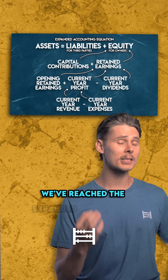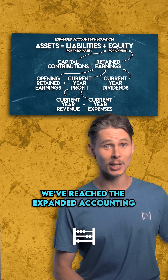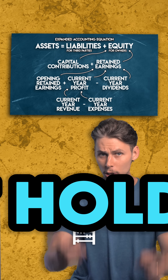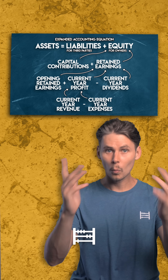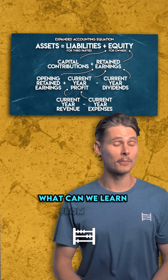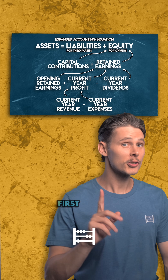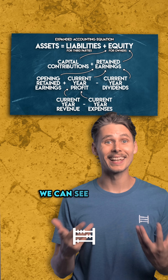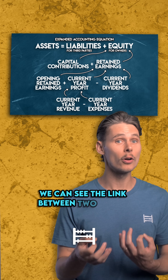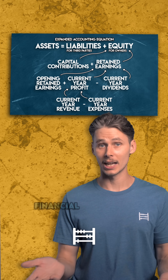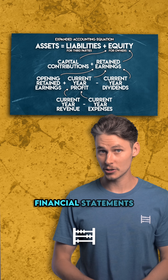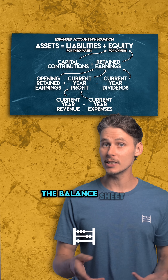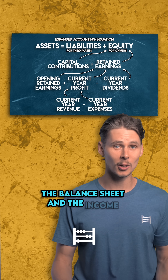We've reached the expanded accounting equation. What can we learn from this? First of all, we can see the link between two of the main financial statements: the balance sheet and the income statement.